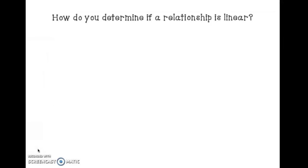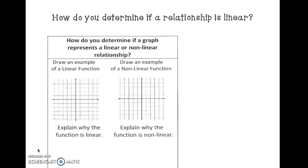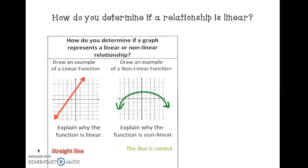How do you determine if a relationship is linear given a graph? The first thing you're going to do is draw an example of a linear function. Linear means line, so we're just going to create a line. It's linear because it's a straight line. Now for a non-linear function — non-linear means it's not going to create a straight line, it will be curved. So linear gives you a straight line, and non-linear gives you a curved line.